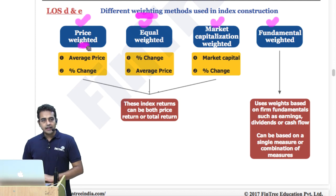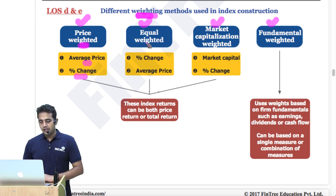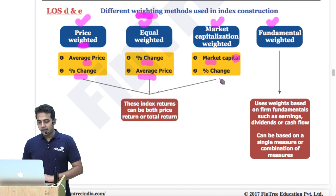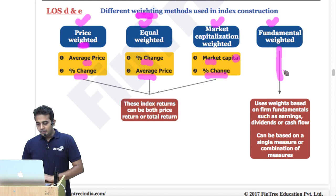When dealing with a price weighted index, first calculate the average price, then calculate the percentage change. When dealing with equal weighted, first calculate the percentage change, then calculate the average price. For market cap, first calculate the market cap, then calculate the percentage change. For fundamental weighted, weights are based on fundamentals such as earnings, dividends, or cash flow.